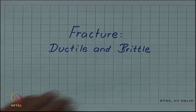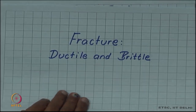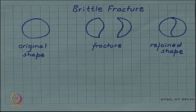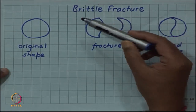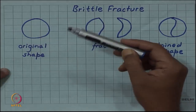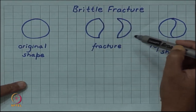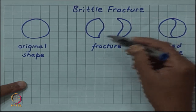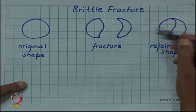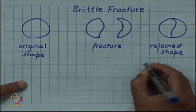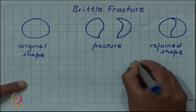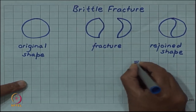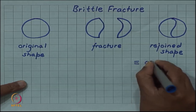Two kinds of fracture are there: ductile and brittle. In brittle fracture, suppose we have an original shape and fracture takes place, breaking it into two pieces. If we rejoin the broken pieces, we recover the original shape — the rejoined shape is the same as the original shape.